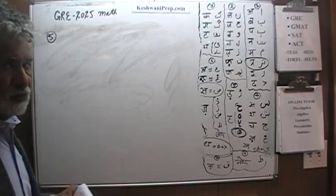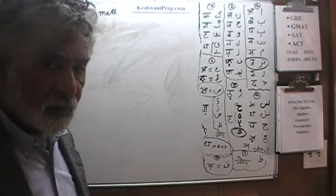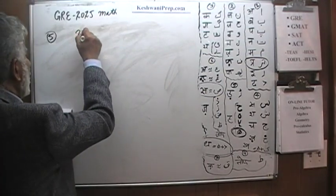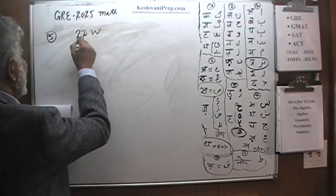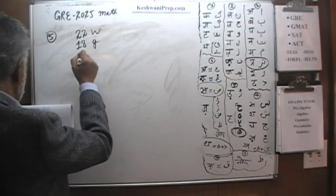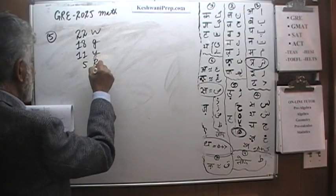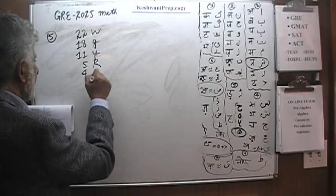The next question is a probability question, but a very straightforward probability question, nothing to it. We are told that we have 22 white marbles, 18 green marbles, 11 yellow marbles, 5 red marbles, and 4 purple marbles.